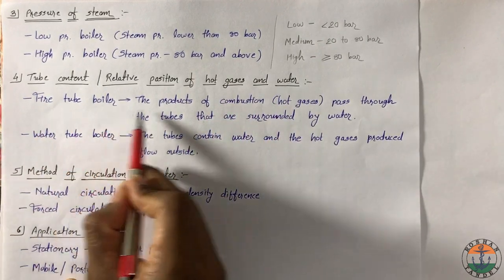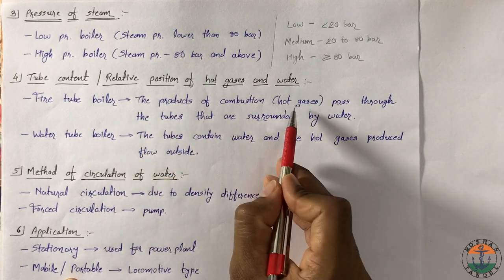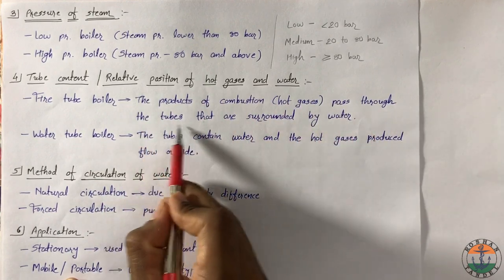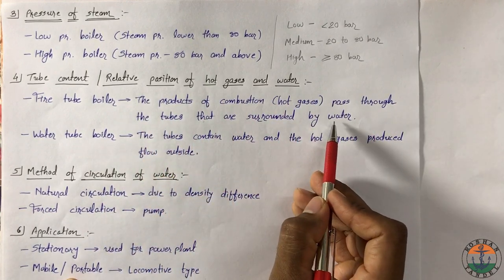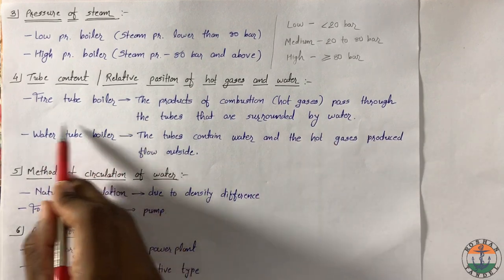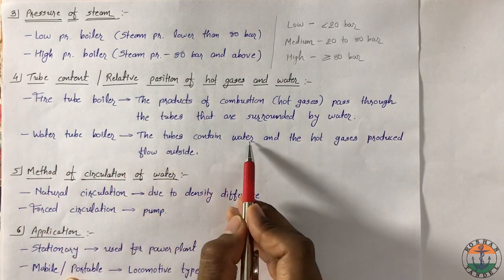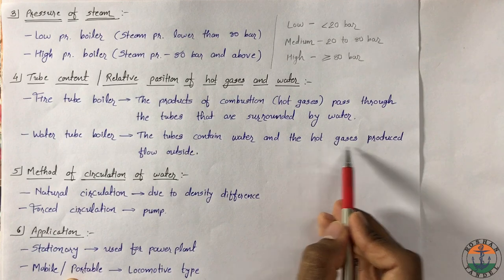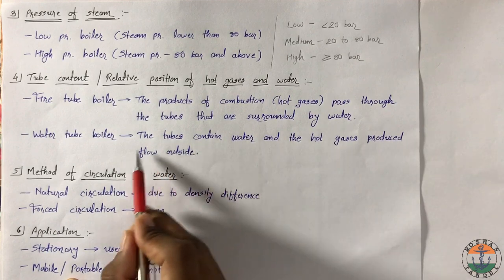The fourth classification is based on the tube content or relative position of hot gases and water. In fire tube boiler, the products of combustion means hot gases pass through the tubes that are surrounded by water. Whereas in water tube boiler, the tubes contain water and these tubes are surrounded by hot gases.